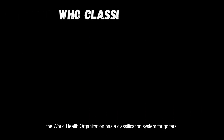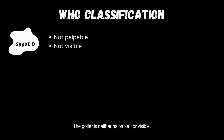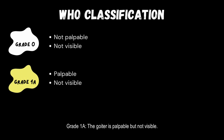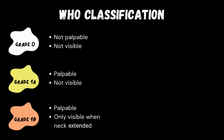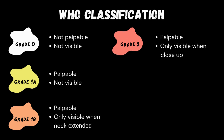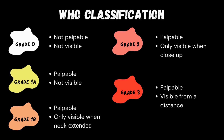The World Health Organization has a classification system for goiters based on their visible enlargement. Here's what the grades mean. Grade 0: the goiter is neither palpable nor visible. Grade 1A: the goiter is palpable but not visible. Grade 1B: the goiter is palpable and visible only when the neck is extended. Grade 2: the goiter is palpable and visible even without neck extension but only from close up. Grade 3: the goiter is large enough to be visible from a distance.